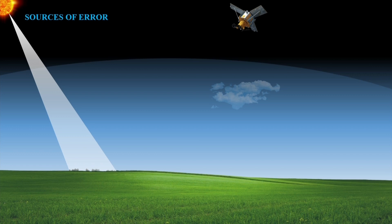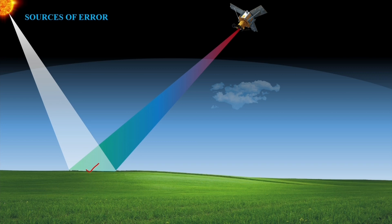Today you will learn more about error identification and correction in remotely sensed images. In my last lecture, I gave you a brief introduction about errors associated with remotely sensed images. In this slide, we will quickly go through the sources of such errors. As we know, the sun is our source of energy in passive remote sensing. The sun illuminates the surface, which gets reflected, emitted, or backscattered and reaches our sensor located in space.